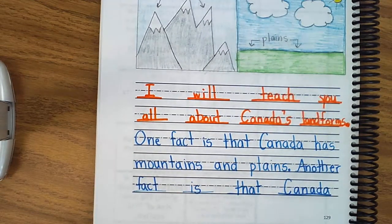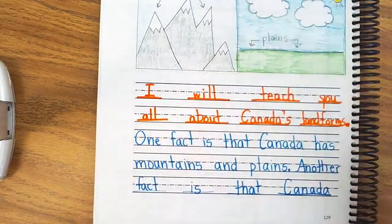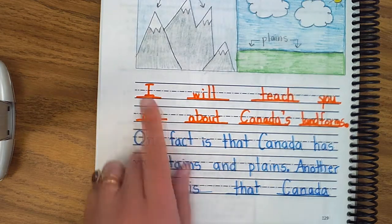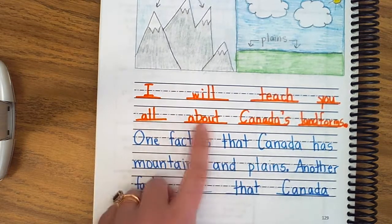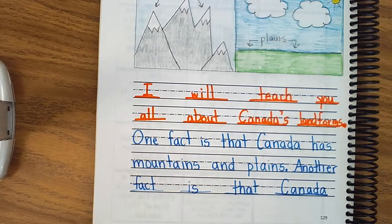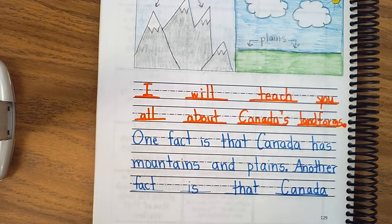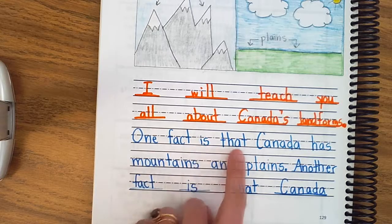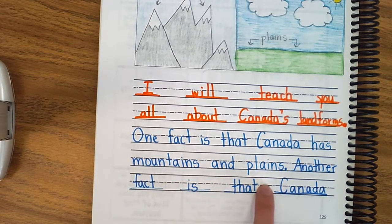Then we went into our topic sentence, that first sentence to tell our reader what we're gonna teach them about. I will teach you all about Canada's landforms. Then we actually gave them some facts. We taught them something. One fact is that Canada has mountains and plains.